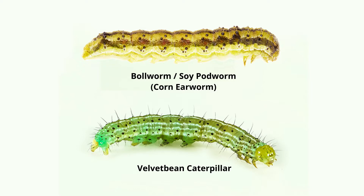While both of these pests are very similar, they do have several distinguishing features. The first distinguishing feature is that a velvet bean caterpillar will have a white stripe running the length of its body. We'll have a picture highlighting that for you.